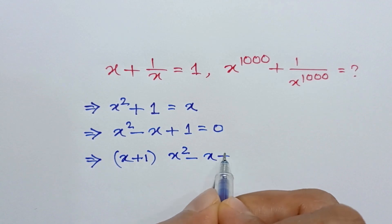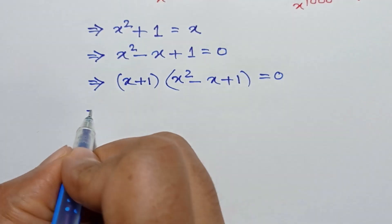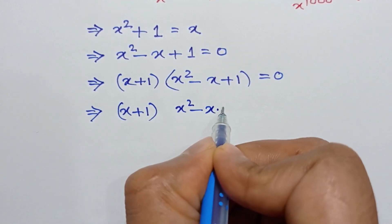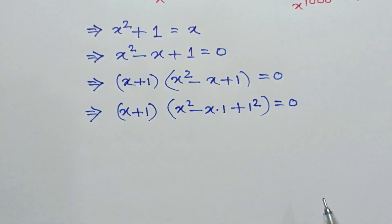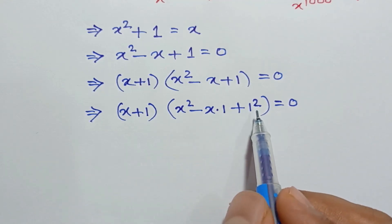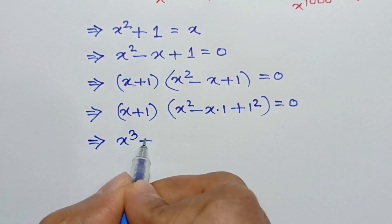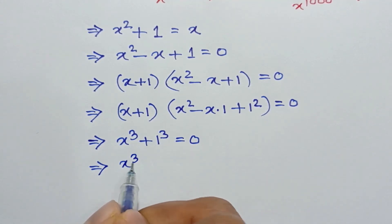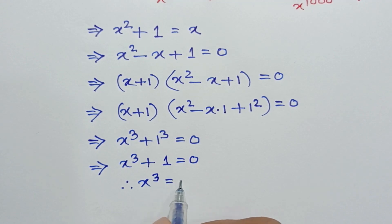If we multiply both sides by x plus 1, we can write x plus 1 times x squared minus x plus 1 equals 0. Using the formula a plus b times a squared minus ab plus b squared equals a cubed plus b cubed, we can write this as x cubed plus 1 cubed equals 0, so x cubed plus 1 equals 0, therefore x cubed is equal to negative 1.